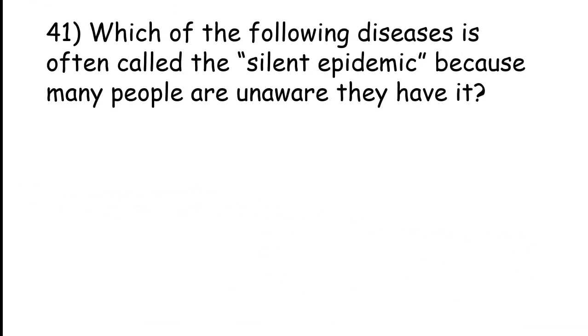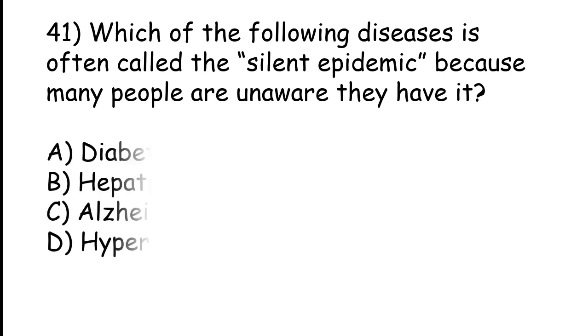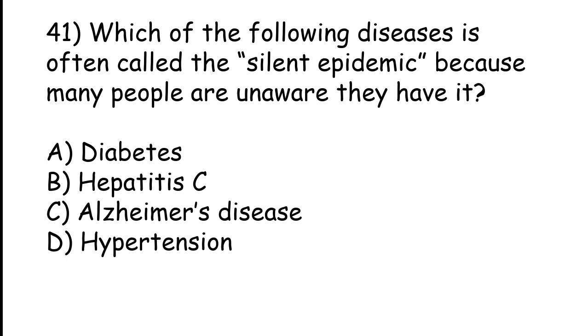Which of the following disease is often called the silent epidemic because many people are unaware they have it? Diabetes, hepatitis C, Alzheimer disease, hypertension. The correct answer is option B, Hepatitis C.